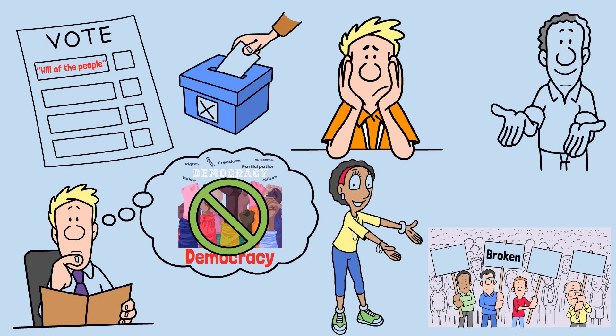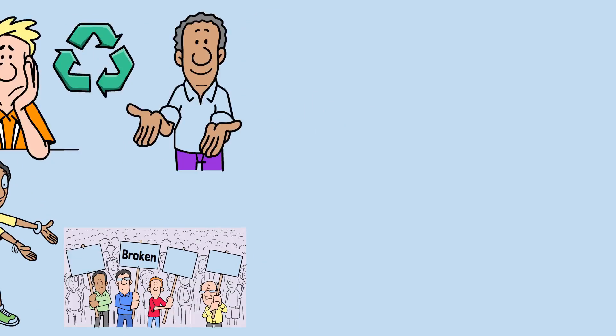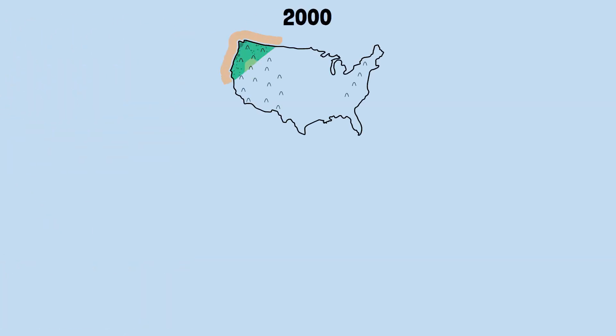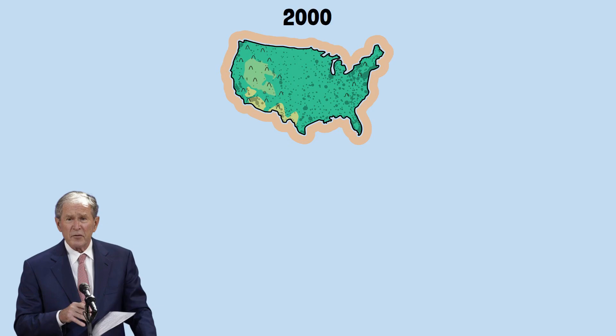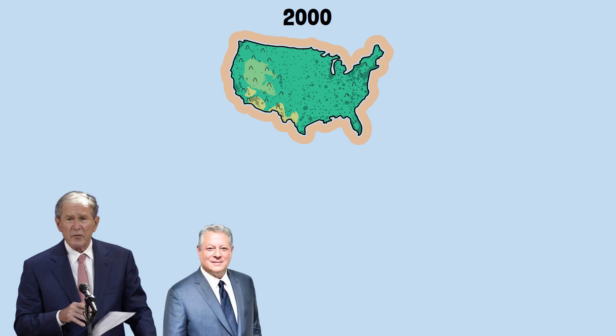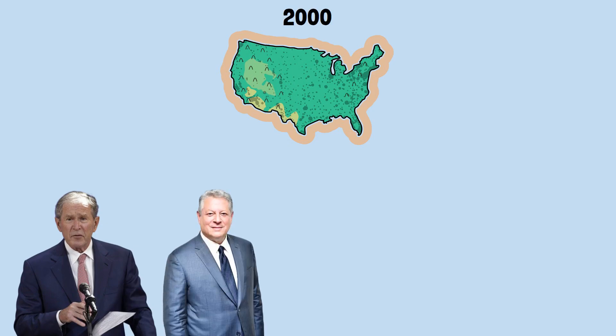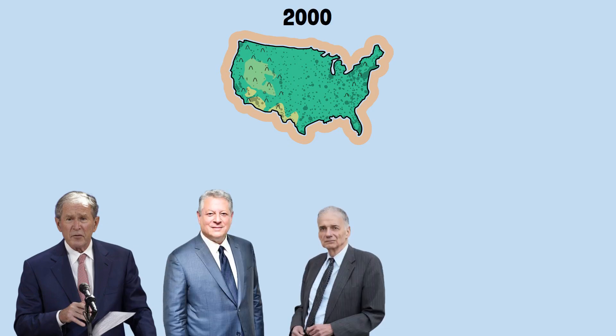Before I show you Arrow's theorem, let me show you why this matters with a real example that happens constantly. The 2000 U.S. presidential election had three major candidates: George W. Bush, Al Gore, and Ralph Nader.